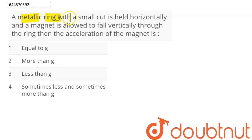Question is: a metallic ring with a small cut is held horizontally and a magnet is allowed to fall vertically through the ring, then acceleration of the magnet is.